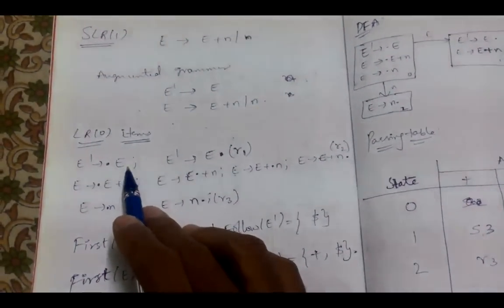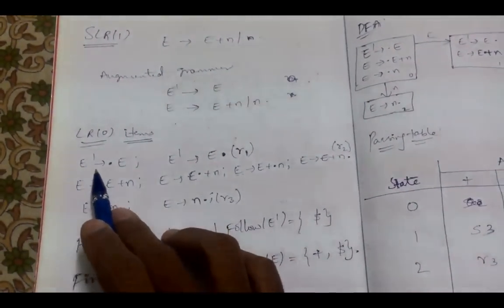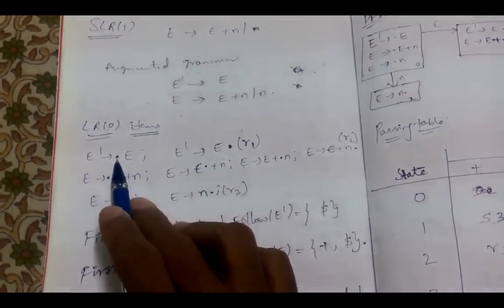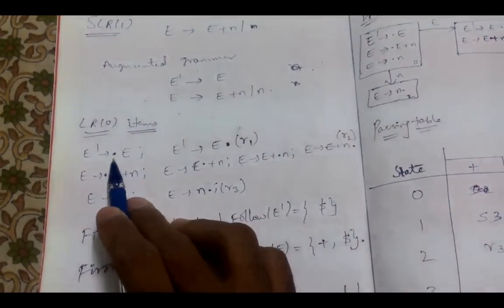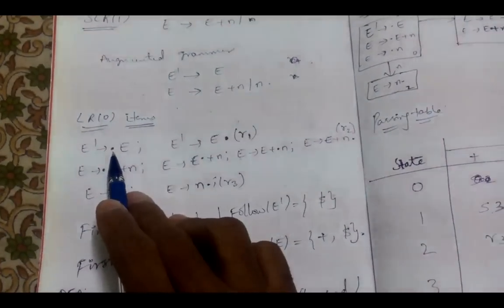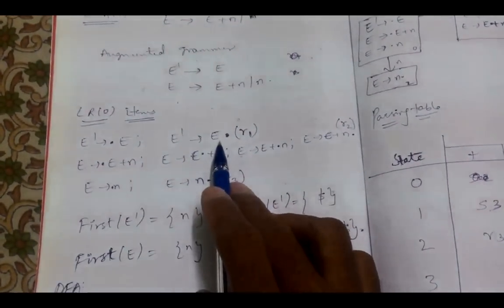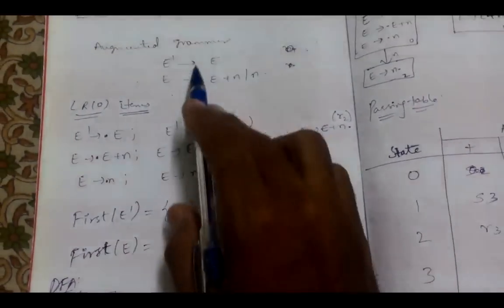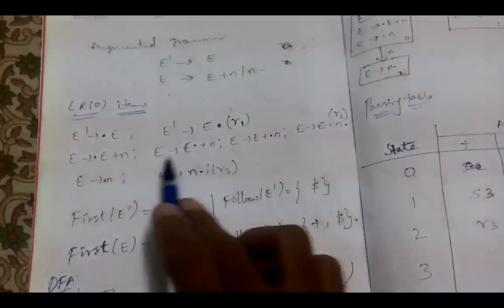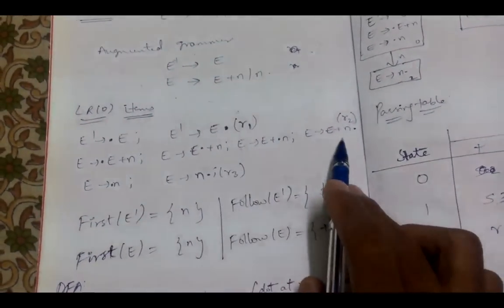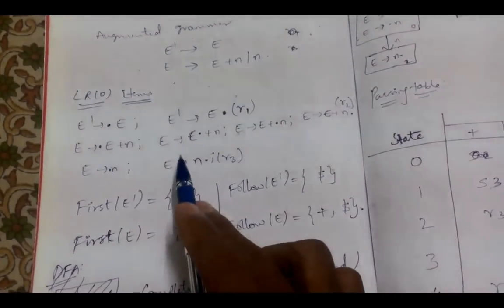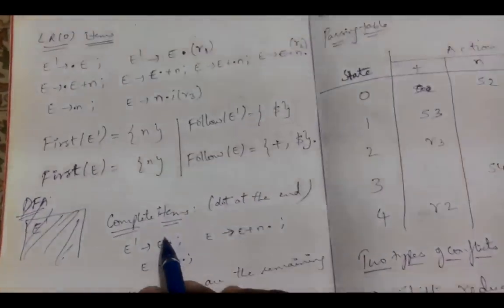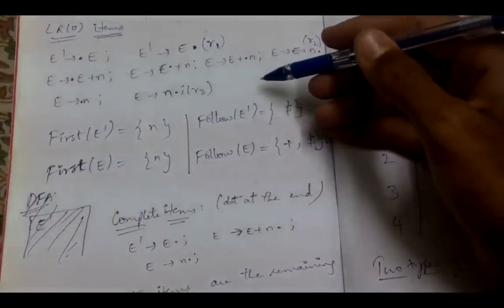Next we need to identify the LR(0) items. LR(0) items are productions with an indication of a dot. This dot indicates how much of the production has been parsed. For example, E' → •E means parsing has just begun, and E' → E• means parsing of E is completed. Similarly, for all productions we need to write the LR(0) items by shifting the dot towards the right side until the end of the production. We also need to calculate the first and follow sets, which will be useful for the parsing table.